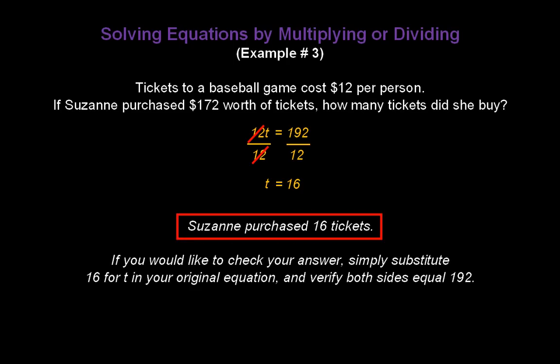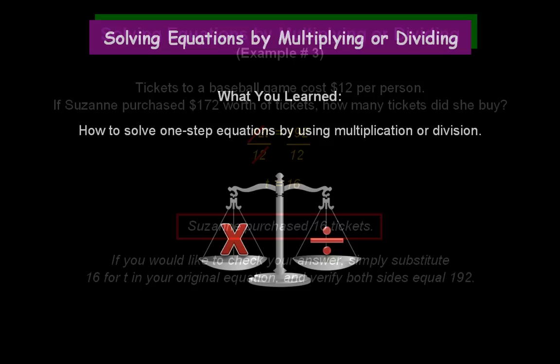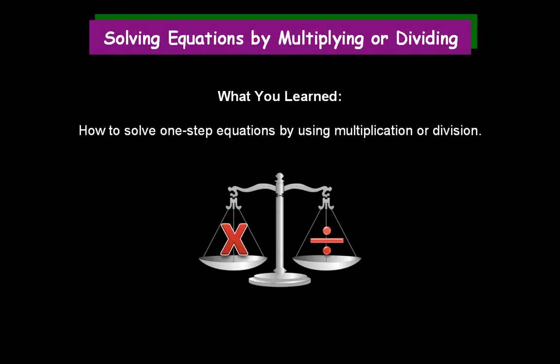And don't forget, if you'd like to check your answer, simply substitute 16 for t back in the original equation, and verify that both sides equal 192. Congratulations! You've learned how to solve one-step equations by using multiplication or division.